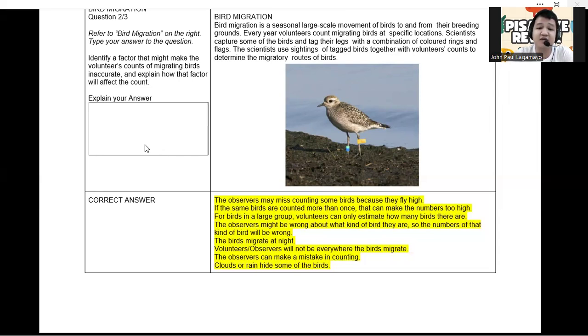Large group estimation. When birds are in large groups, it becomes challenging to count each one precisely. Volunteers might only be able to make a rough estimate, leading to a less accurate count. Number four: species identification errors. Observers might misidentify bird species, which can distort the counts for a particular species, especially if two species look similar. And then number five: night migration.